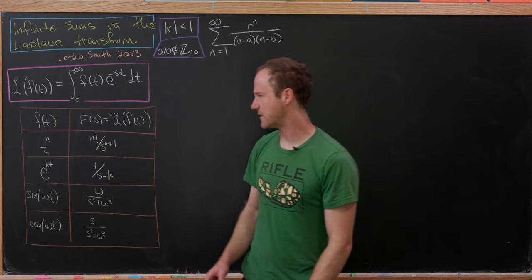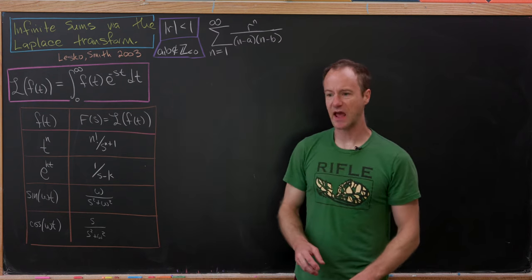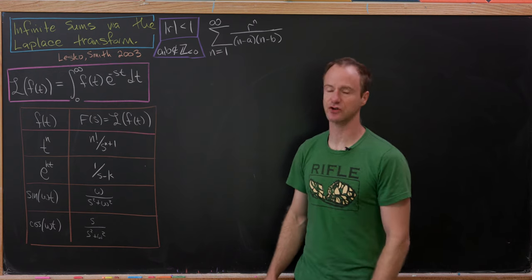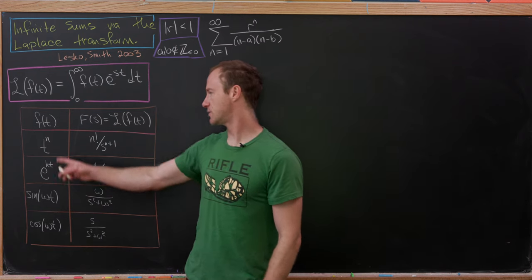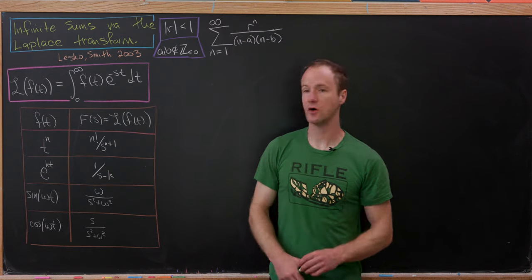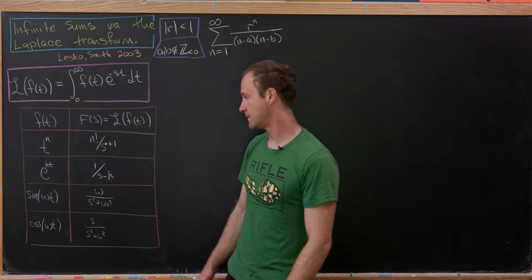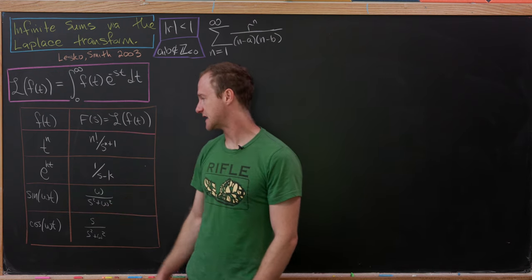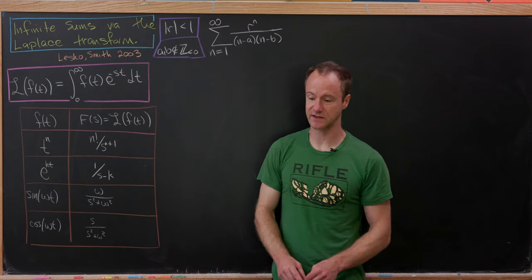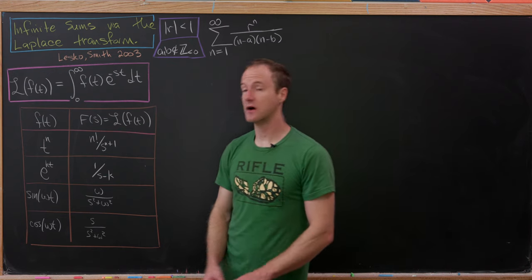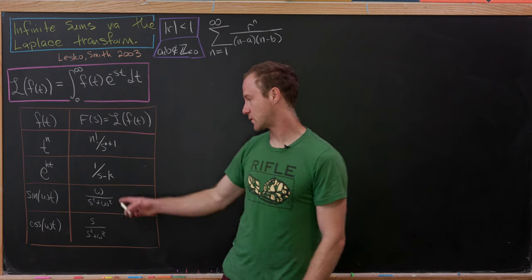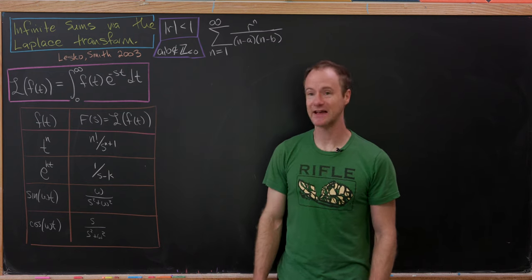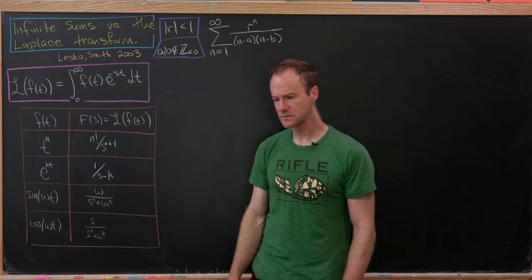Here's a chart of some standard Laplace transforms. Generally, when you learn about this in a differential equations class, your first day is deriving this chart. The Laplace transform of t to the n is n factorial over s to the n plus 1, for n strictly bigger than negative 1. e to the kt transforms to 1 over s minus k. Sine of omega t transforms to omega over s squared plus omega squared. And cosine of omega t transforms to s over s squared plus omega squared.